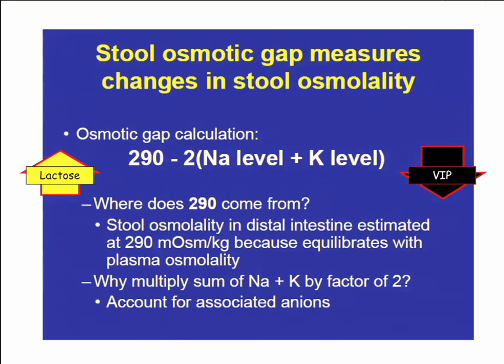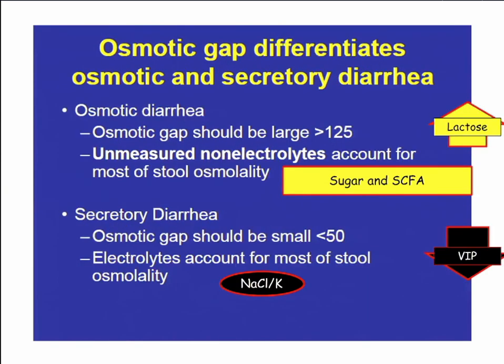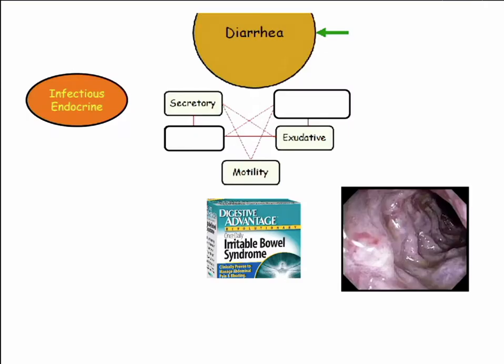The stool osmotic gap: VIP-oma is normal because you're excreting sodium and potassium, so it's a low gap. Lactose gives you sugar and short-chain fatty acids, so it's a high gap. That's all I have to say on cows and lactose intolerance.